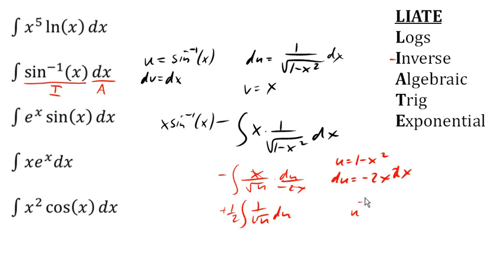So we'll have positive 1 half times 2 root u. Back substituting, that'd be a square root of 1 minus x squared.